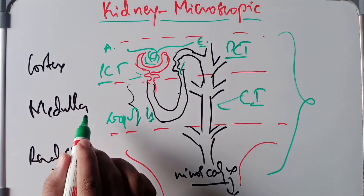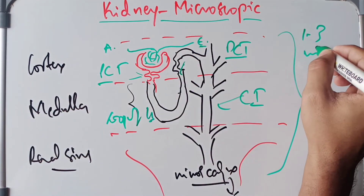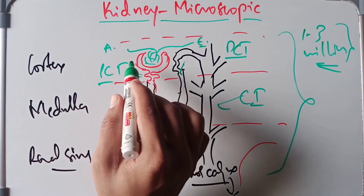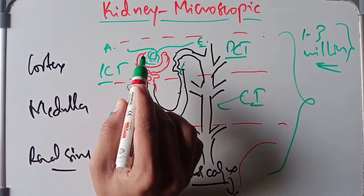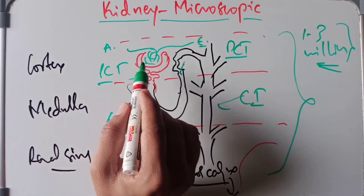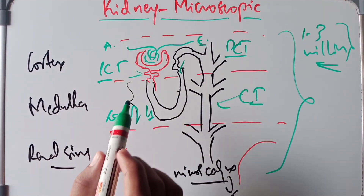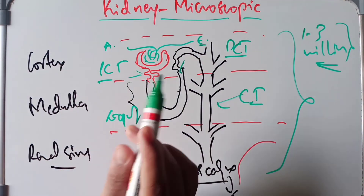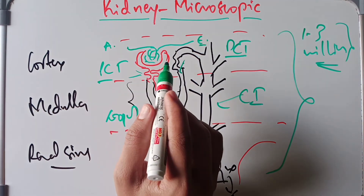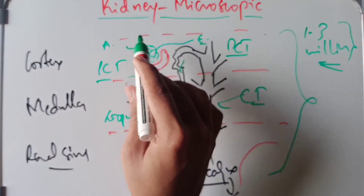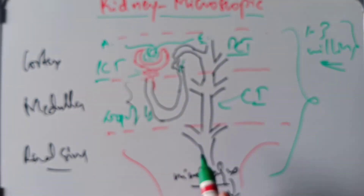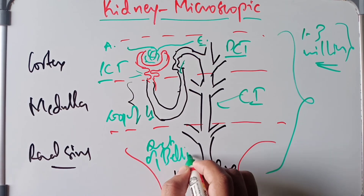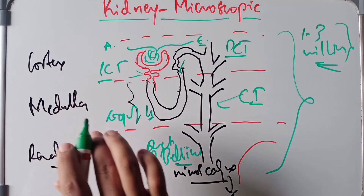The nephron is the structural and functional unit of the kidney, and around one to three million nephrons are contained in the kidney. Each nephron consists of a glomerulus and a tubule system. The glomerulus is a tuft of capillaries surrounded by the Bowman's capsule. The tubular system consists of the proximal convoluted tubule, the loop of Henle, and the distal convoluted tubule. Many collecting tubules unite together to form the collecting duct, also called the duct of Bellini.